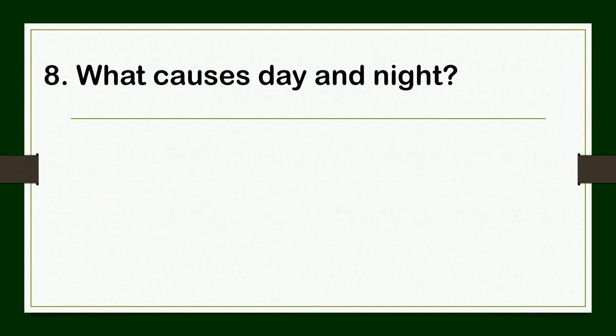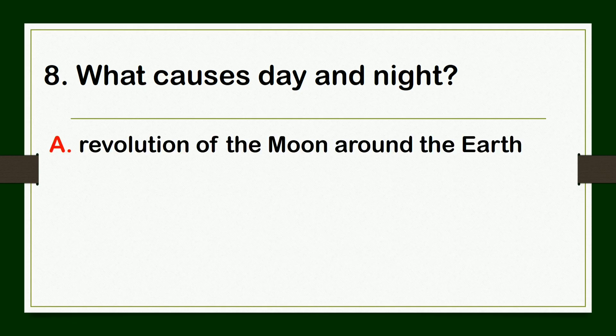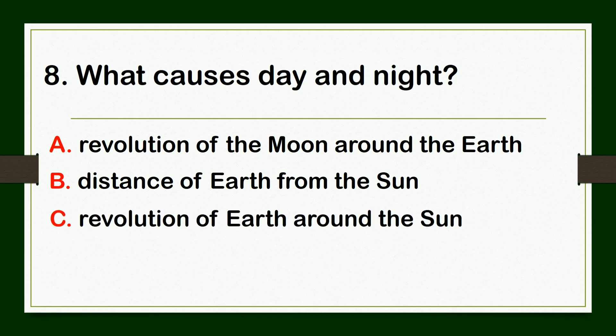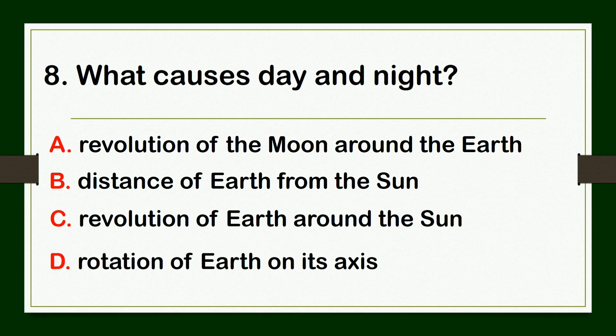What causes day and night? A. Revolution of the moon around the Earth, B. distance of Earth from the Sun, C. revolution of Earth around the Sun, or D. rotation of Earth on its axis.